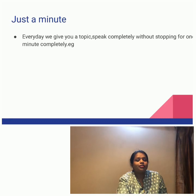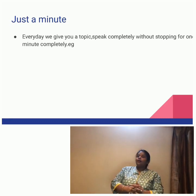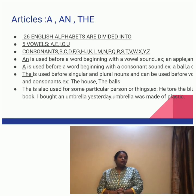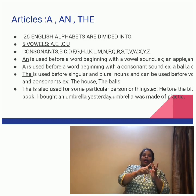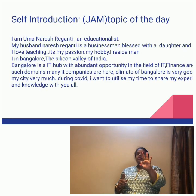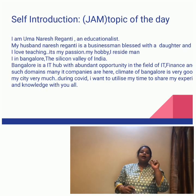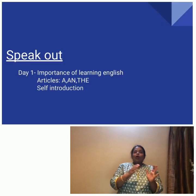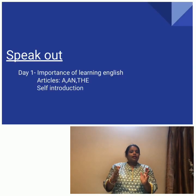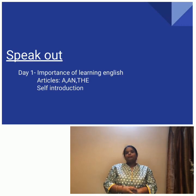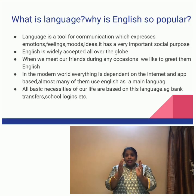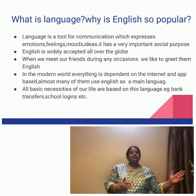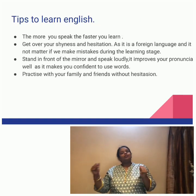Today our lesson is on articles. What are articles? A, an, and the — these three are called articles. We all know in English there are 26 alphabets, and these 26 alphabets are divided into two parts: vowels and consonants.